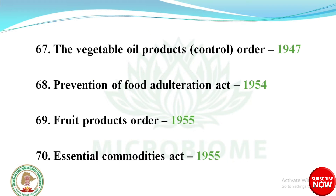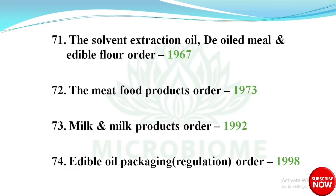Eight acts repealed by FSS Act 2006: Vegetable Oil Products Control Order 1947, Prevention of Food Adulteration Act 1954, Fruit Products Order 1955, Essential Commodities Act 1955 (food provisions), Solvent Extraction Oil De-Oiled Meal and Edible Flour Order 1967, Meat Food Products Order 1973, Milk and Milk Products Order 1992, and Edible Oil Packaging Order 1998.